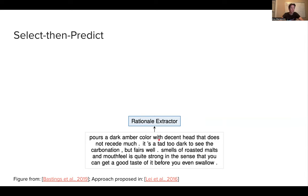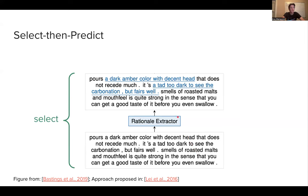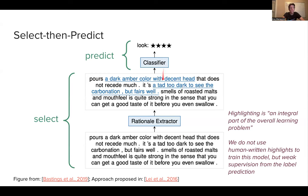So we have pores a dark amber color with decent head that does not receive much. It's a tad too dark to see the carbonation, but fair as well and so on. So maybe from reading this, we can already said with decent could be a signal for a positive review, not receiving sounds also good, tad too dark hint of negative and so on. So we kind of have a sense of which tokens we should select to make a prediction here.